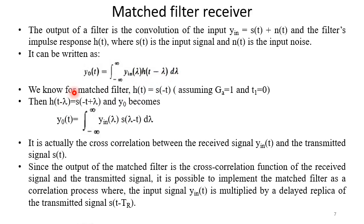So we know that for matched filter h(t) equal to s(-t) assuming G_A equal to 1 and t_1 equal to 0.